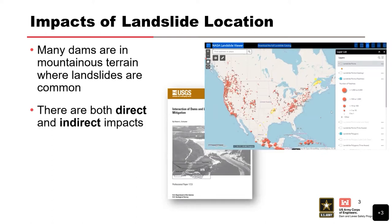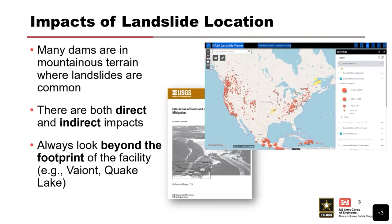There are both direct and indirect impacts due to landslides. Always look beyond the footprint of the facility — examples being Vajont and Quake Lake, which we'll cover later. In regards to direct impacts, you can have slides that hit the spillway structures or slides that hit the retaining gates on the spillway structures.